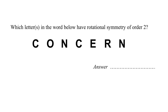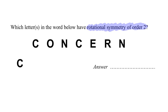Hello everyone, welcome to this video where we are required to see which letters have rotational symmetry of two — meaning if we turn the letters one round of 360 degrees, we should see that same letter in the exact form and shape two times. Let's see for letter C: turning slowly — no. So C only has rotational order of one. C is not the answer.